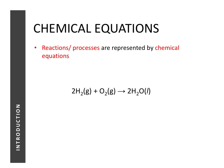Here is an example of a chemical equation. In a chemical equation, the substances on the left side are known as the reactants, and the substances on the right side are known as the products. The arrow represents change — it tells us that the reactants are being transformed into products.